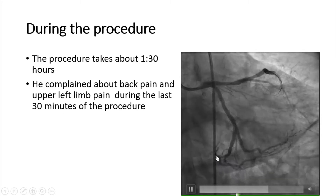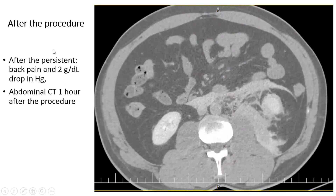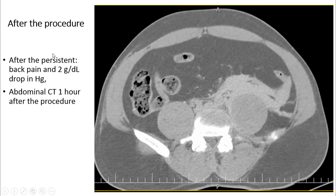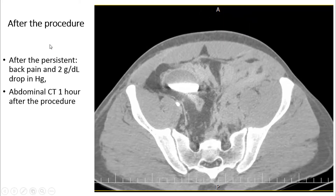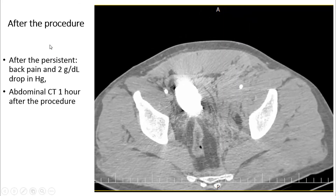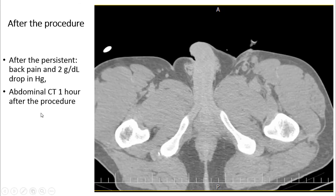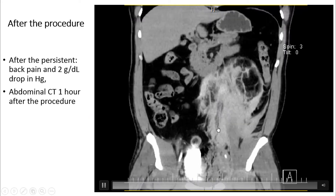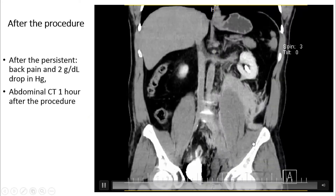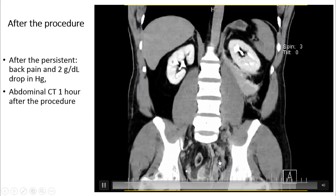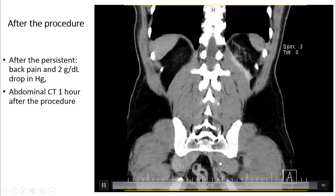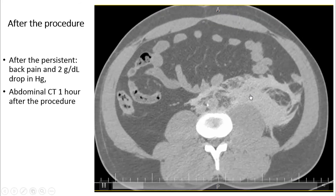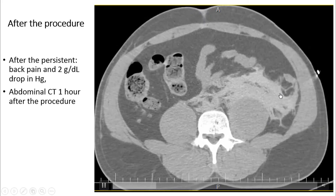This is our final result. After the procedure, because of his persistent back pain and a two gram per deciliter drop in hemoglobin, we were suspicious of retroperitoneal hemorrhage. The patient was sent to our radiology department for an abdominal CT one hour after the procedure. You can see the retroperitoneal hematoma, and here you can see how large the retroperitoneal hemorrhage is in this patient.